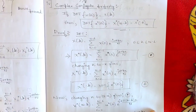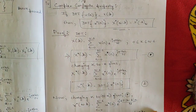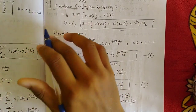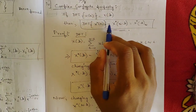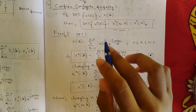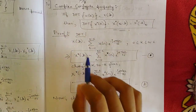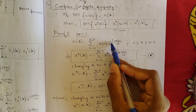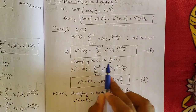Let's go to the next property: the complex conjugate property. This property says: if DFT{x(n)} = X(k), then DFT{x*(n)} = X*(n - k) = X*(-k). To prove it, start from the DFT formula, then write its complex conjugate X*(k) by changing x(n) to x*(n), X(k) to X*(k), and e^(-j...) to e^(+j...) for the complex conjugate.